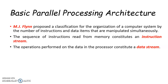He uses the stream concept for describing a machine structure. A stream is simply a sequence of items. An instruction stream is nothing but a sequence of instructions fetched from memory. And a data stream is nothing but a flow of data. Based on his concept, he classified computer architectures into four main categories.